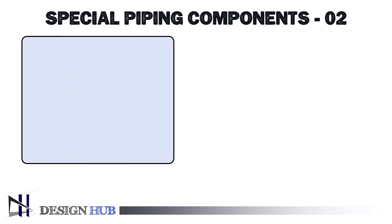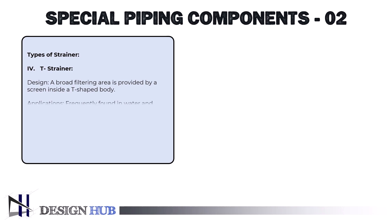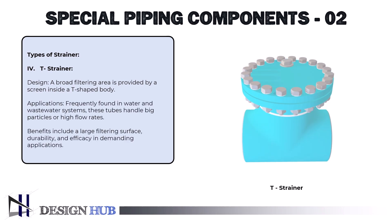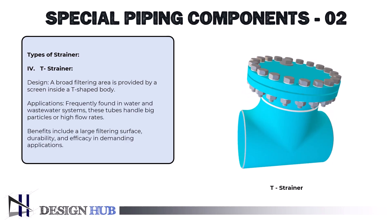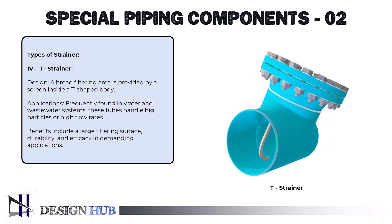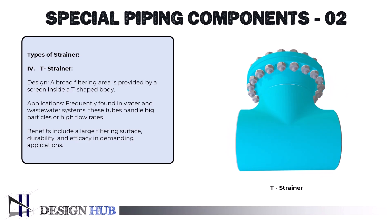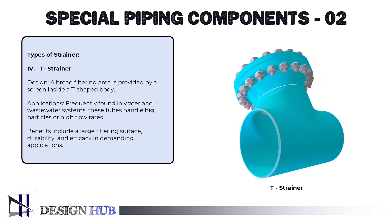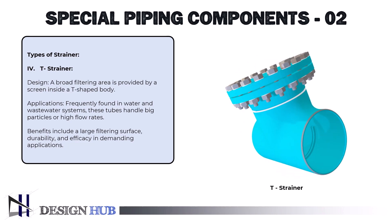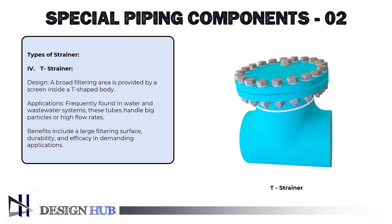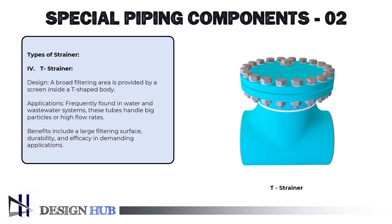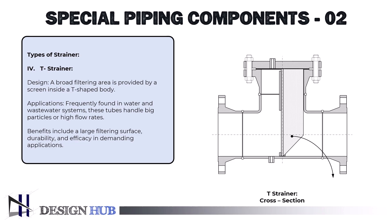The last one is a T-strainer. A broad filtering area is provided by a screen inside a T-shaped body. Applications: frequently found in water and wastewater systems, these handle big particles or high flow rates. Benefits include a large filtering surface, durability, and efficacy in demanding applications.